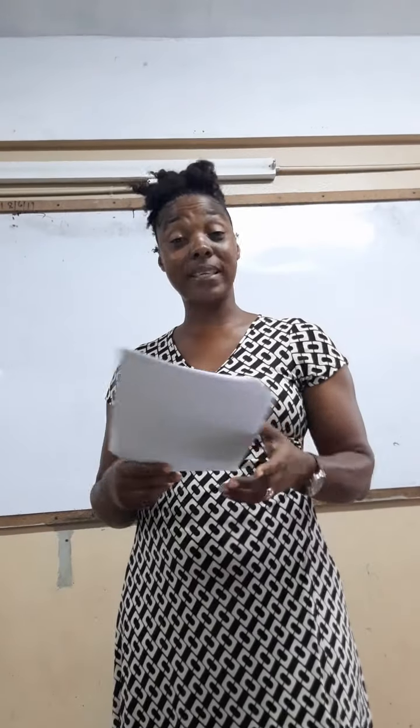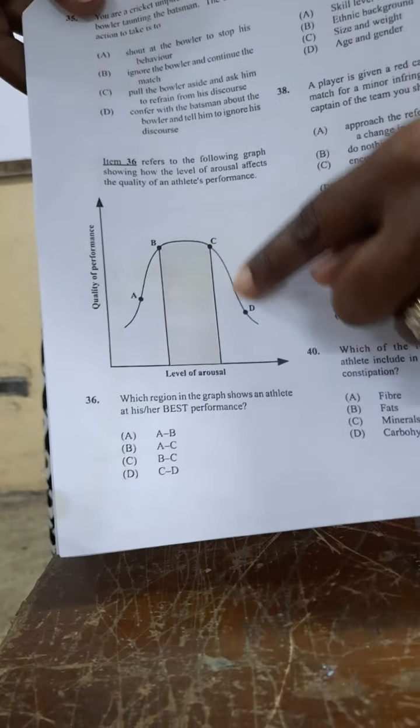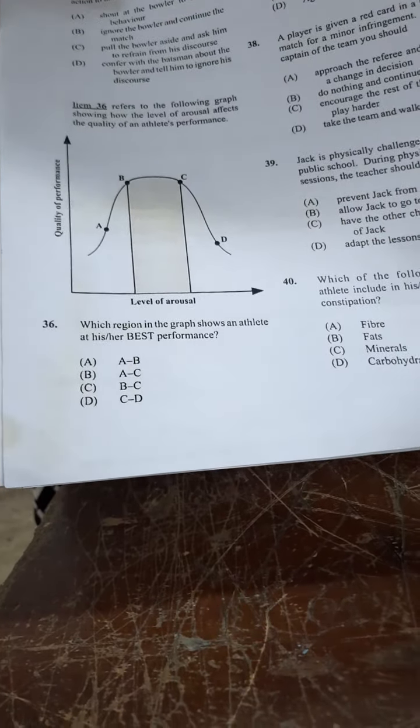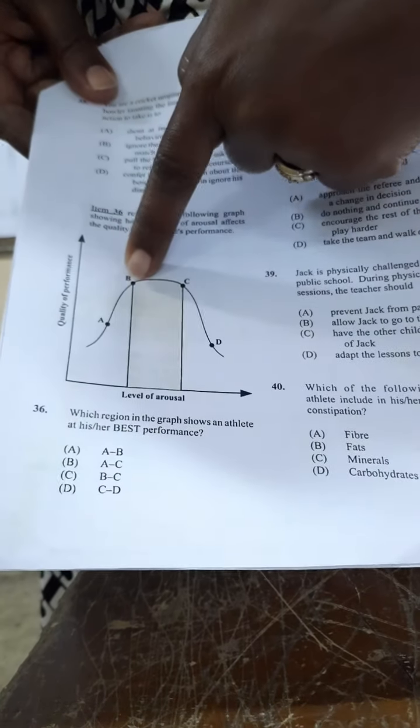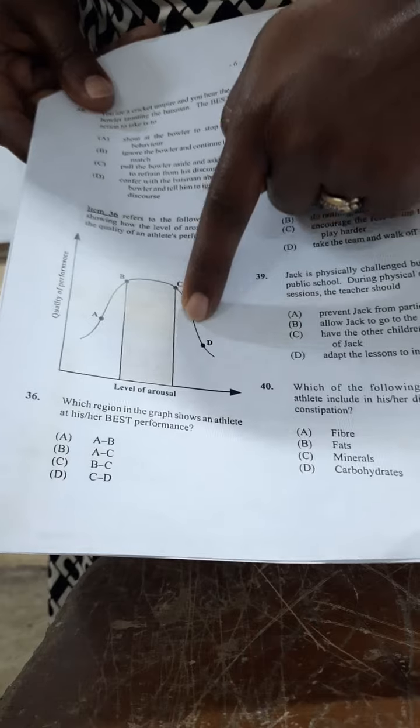The main reason why fewer girls than boys take part in sports is stereotyping — so it is B. You are at a cricket match and you hear the bowler taunting the batsman. The best action to take is C — you are going to pull the bowler aside and ask him to refrain from his conduct. Looking at the graph, the region showing an athlete at their best performance is where they peak, and the answer is C.